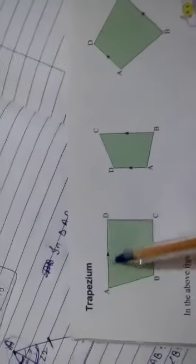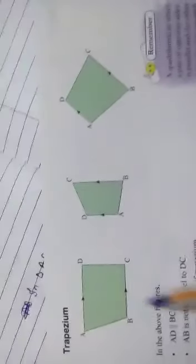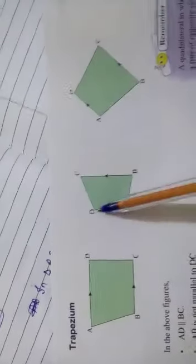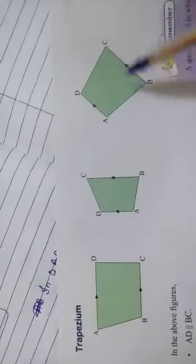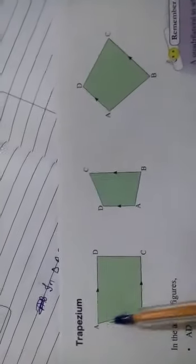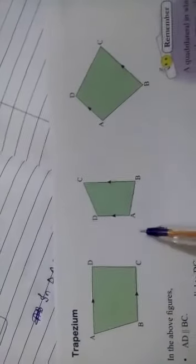Next is a trapezium. It can be drawn in various orientations. In a trapezium, only two sides are parallel — AD is parallel to BC. The other two sides, AB and DC, are not parallel. So it is a four-sided figure with only one pair of parallel sides.